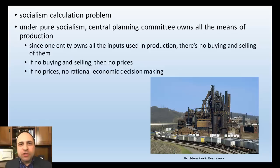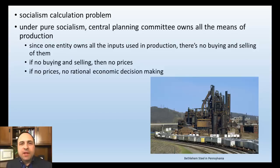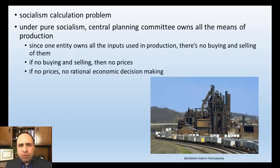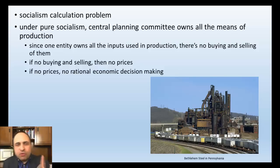Now we get to the problem socialism faces — the calculation problem. In the market economy, we have prices for the means of production, so we can calculate profit and loss using arithmetic. But under socialism, they don't have prices for the means of production. A central planning committee owns and controls all the means of production and must decide how much concrete, steel, and consumer goods to produce, in what way, in what location, in what quantity. But because one entity owns everything, there's no buying and selling — and therefore no prices.